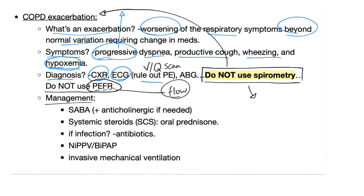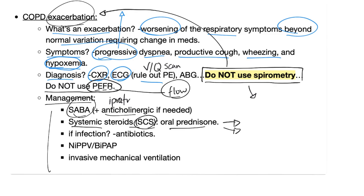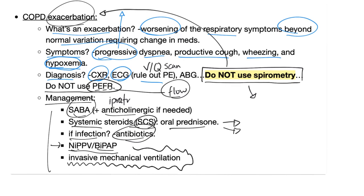Management of COPD exacerbation: short-acting beta agonists plus an anticholinergic if needed, such as ipratropium. Add systemic steroids — oral prednisone — only for the exacerbation, not long-term. If there's infection, add antibiotics. Then use BiPAP with non-invasive positive pressure ventilation. Last resort: invasive mechanical ventilation with intubation.